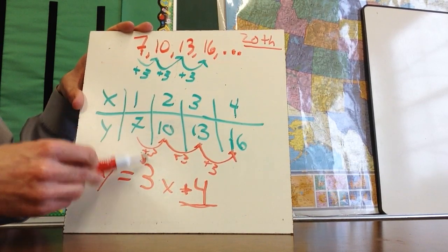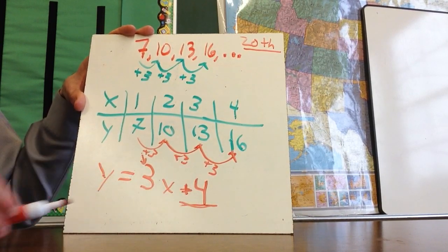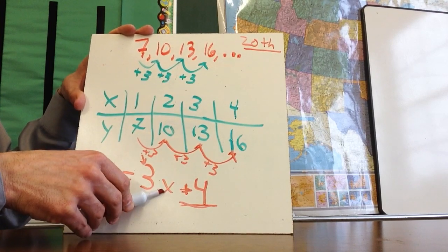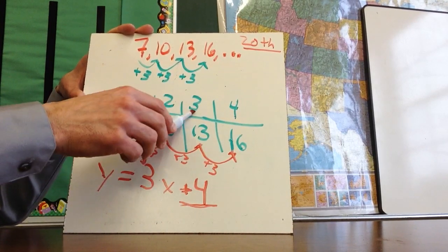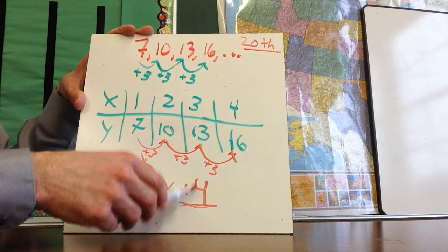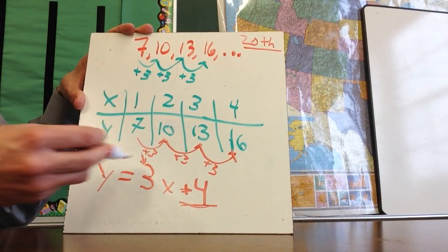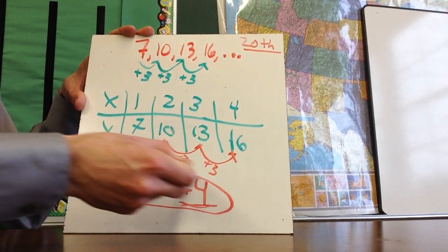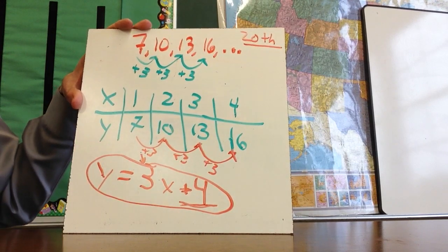So now when I take this one, I substitute three times one is three, plus four is seven. Three times two is six, plus four is ten. Three times three is nine, plus four is thirteen. So my equation for this sequence is three X plus four.